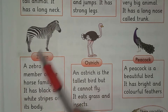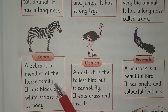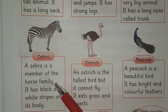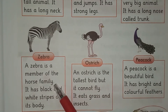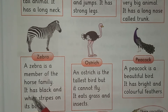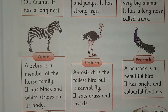Yeh zebra hai. A zebra is a member of the horse family. Ghore ke khandan ka ek fard hai. It has black and white stripes on its body. Iske jisam par siyah aur safed dhariyan hain.